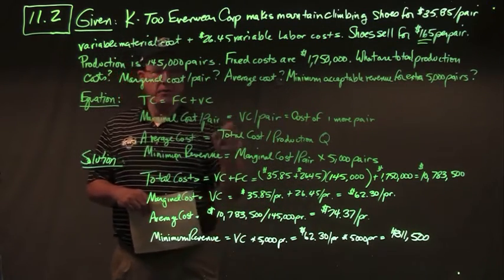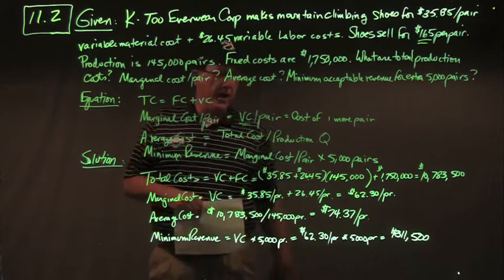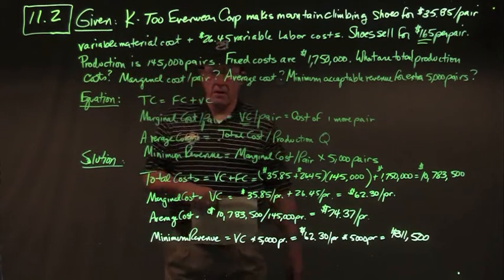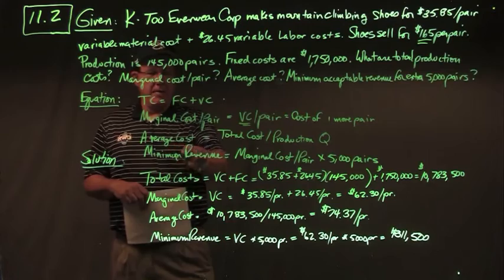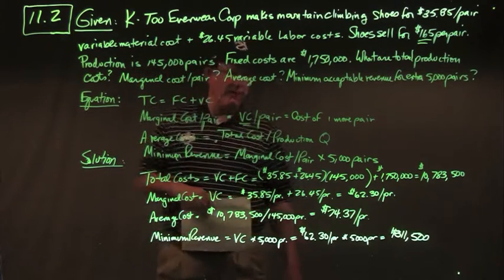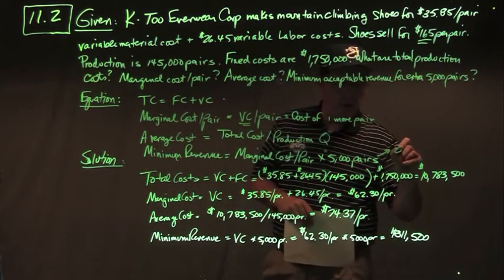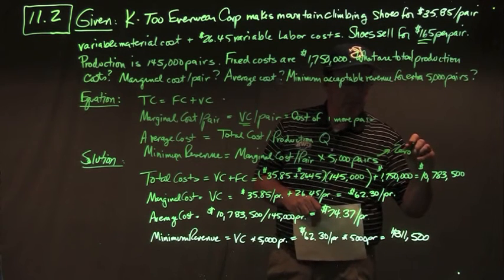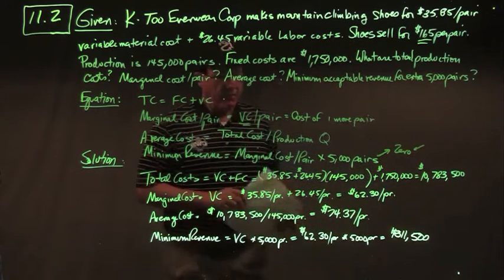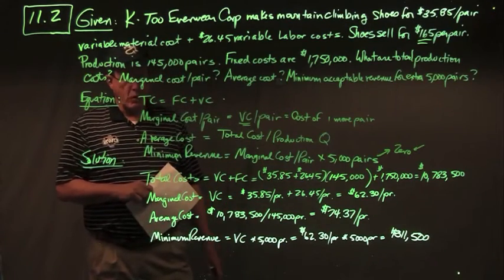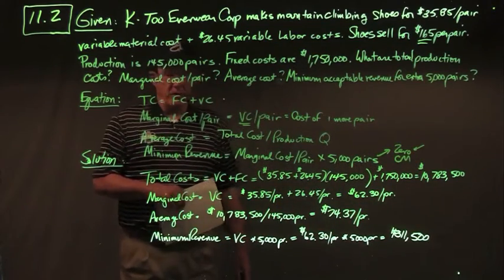Equations: total cost is fixed cost plus variable cost. Marginal cost per pair is the same as variable cost per pair — cost of one more pair, also known as incremental cost. Average cost is total cost divided by production quantity. Minimum acceptable revenue for the special 5,000-pair order means we want contribution margin equal to zero — price minus variable cost equals zero.